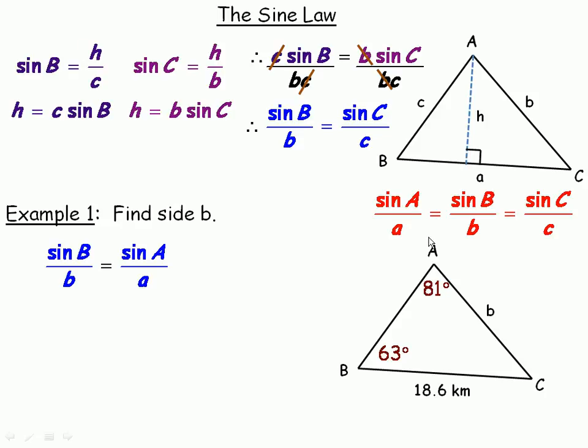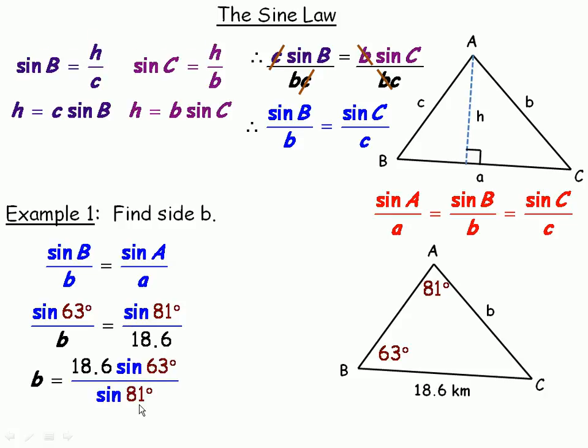I want to find side b here. I'll use the angle A, side a pair and the angle B, side b pair. That's why I'm writing sine B over b equals sine A over a. I don't know angle C and I don't know side c, so it's useless to use those. Now we'll fill in all the knowns. Angle A is 81, angle B is 63, and side a is 18.6. We'll cross multiply to solve for b, so b would be the product of 18.6 and sine 63 divided by the sine of 81. If you divide that out, you get about 16.8 kilometers for side b.